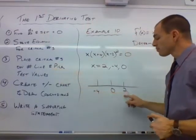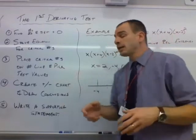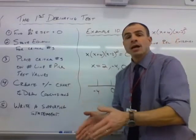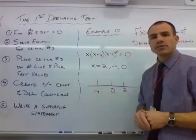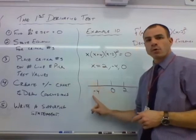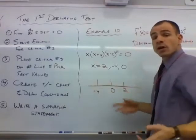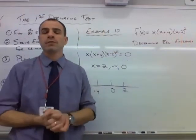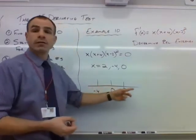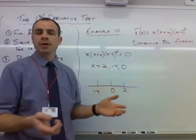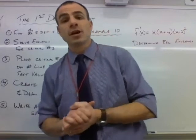These are the only three spots where the derivative equals zero. Everywhere else, the derivative is either positive or negative. The derivative can't change from positive to negative unless it crosses the x-axis where it equals zero. So between these critical numbers — before −4, between −4 and 0, between 0 and 2, and after 2 — everything will be consistently positive or negative. We test each of the four intervals by picking a test value and plugging it into the first derivative — that's why it's called the first derivative test.